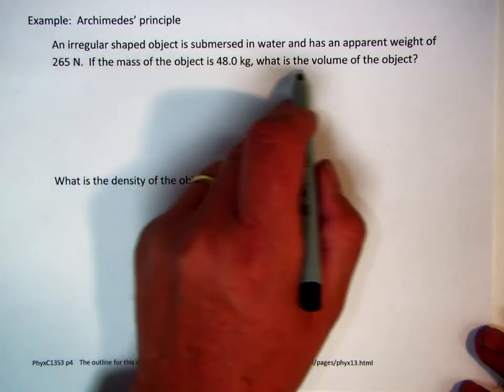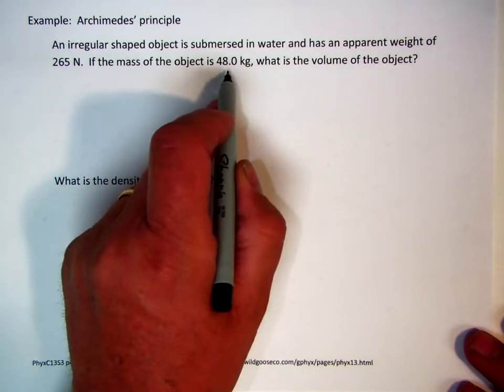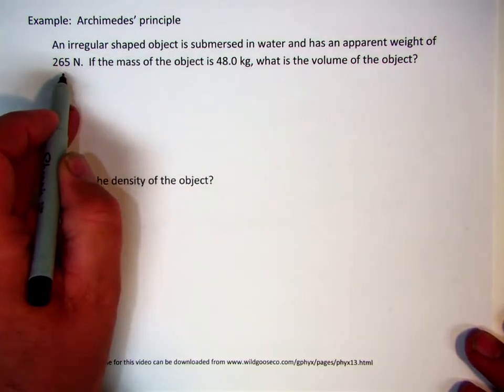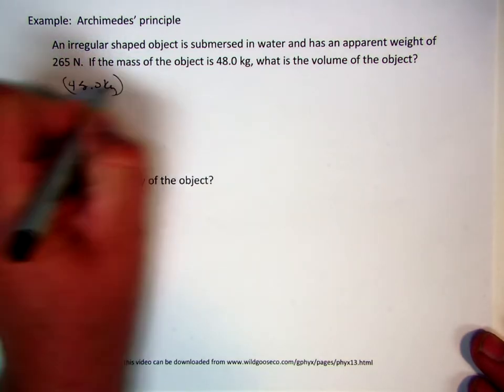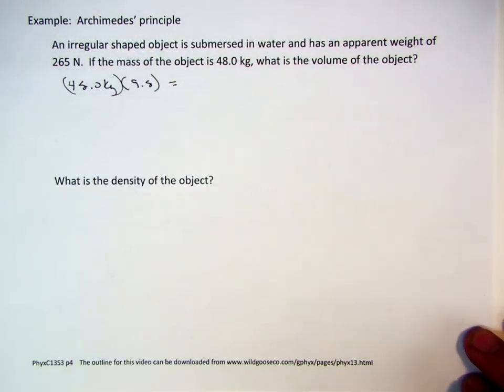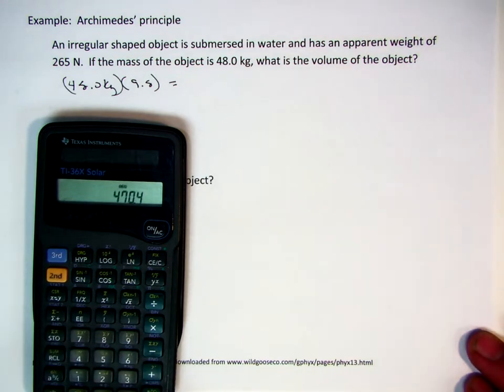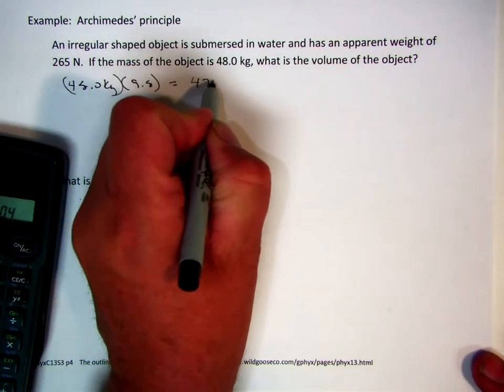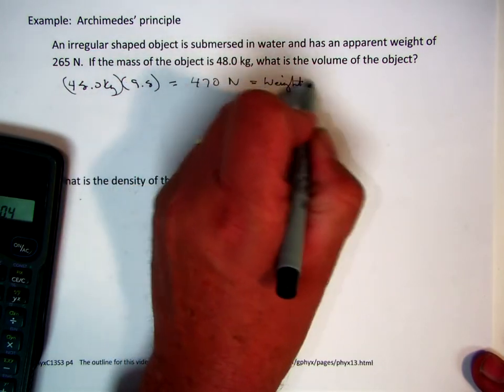If the mass of the object is 48 kilograms, what is the volume of the object? Well, if it's 48 kilograms, I can calculate its weight out of the water. And then I know the weight of the object in the water and the difference is the buoyant force. So let's take 48.0 kilograms, multiply that by 9.8 and that equals the weight of the object in the air. So 48 times 9.8 gives us 470 Newtons. That's the weight in the air.